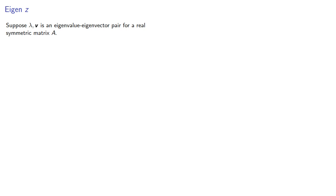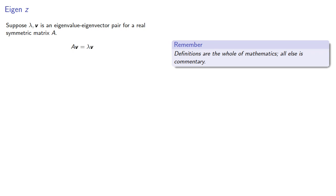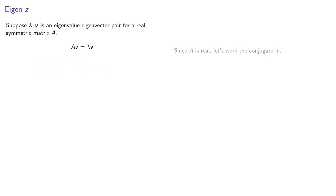So now let's talk eigenvalues. Suppose lambda v is an eigenvalue-eigenvector pair for a real symmetric matrix A. Definitions are the whole of mathematics, all else is commentary. So we know that Av equals lambda v. Now since A is real, let's work the conjugate in. So if we conjugate both sides, we get... But since A is real, the conjugate of A is just A itself.